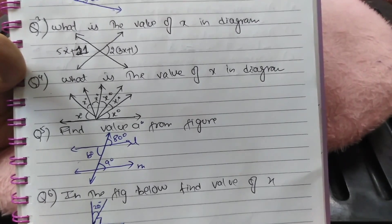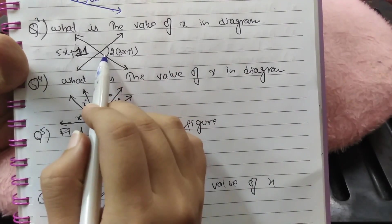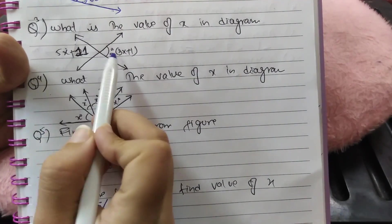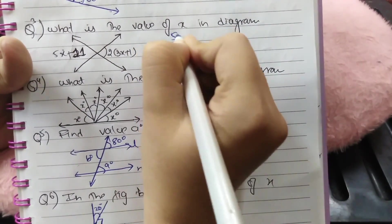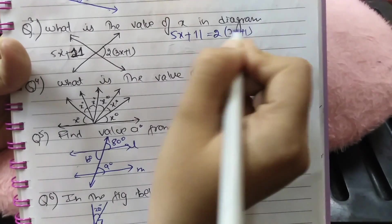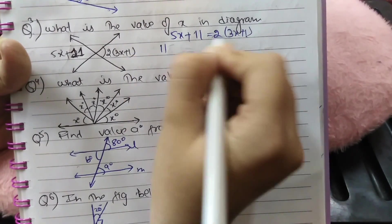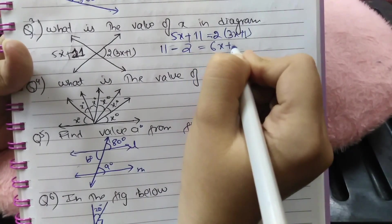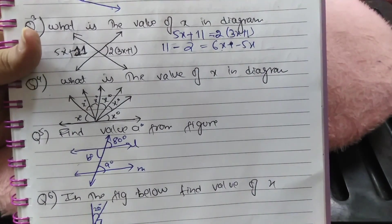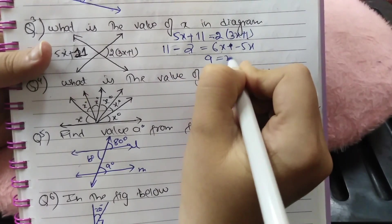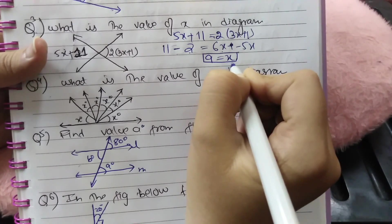Next question, question number 3: what is the value of X in the given diagram? As we discussed in lecture 1, vertically opposite angles are equal. These angles are vertically opposite, so 5X plus 11 will be equal to 3X plus 1. Moving terms: 11 minus 2 gives 9, and 6X minus 5X gives X. So X is 9.